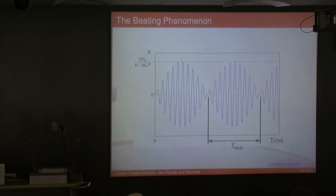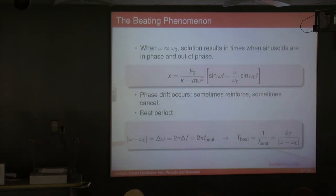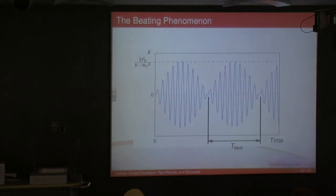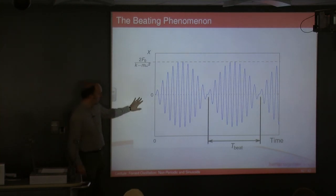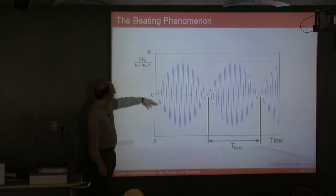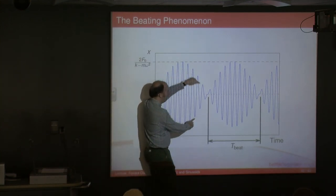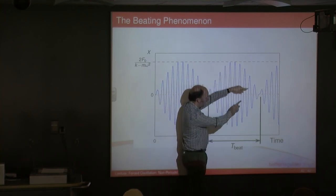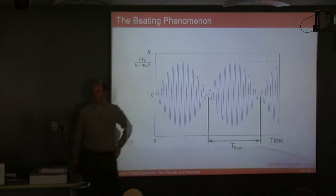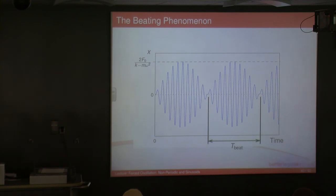So that's beating, and that's what it looks like if we plot it. Taking the equation we had before and plotting across time, we start from zero, the amplitude increases to a maximum where the two waves add together, then drops to zero where they cancel, and increases again. That envelope gives us our beat period — not the frequency of the oscillation itself, but the frequency of the beating.